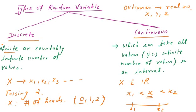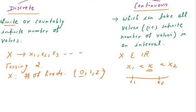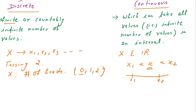In the case of a continuous random variable, values are defined within an interval. Within an interval there are infinitely many values — it can take all values within an interval. So a continuous random variable has an infinite number of values.